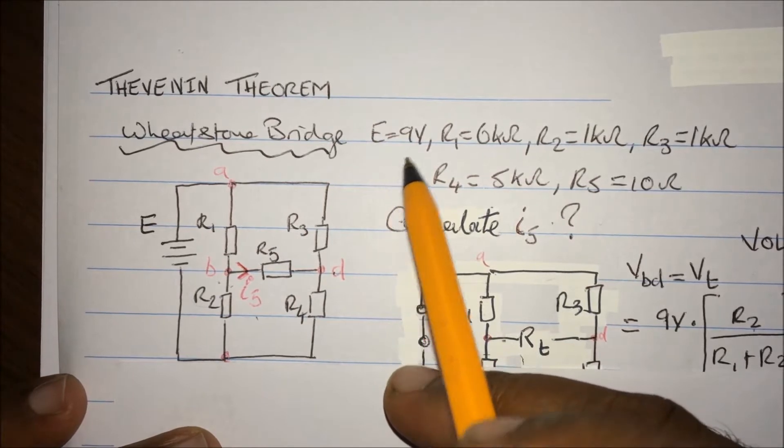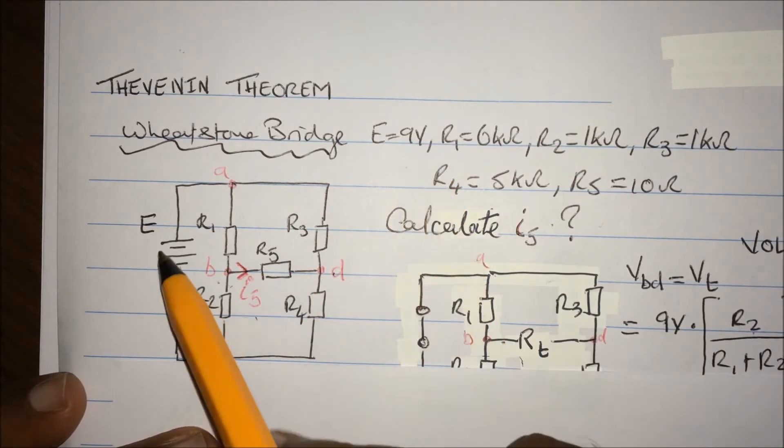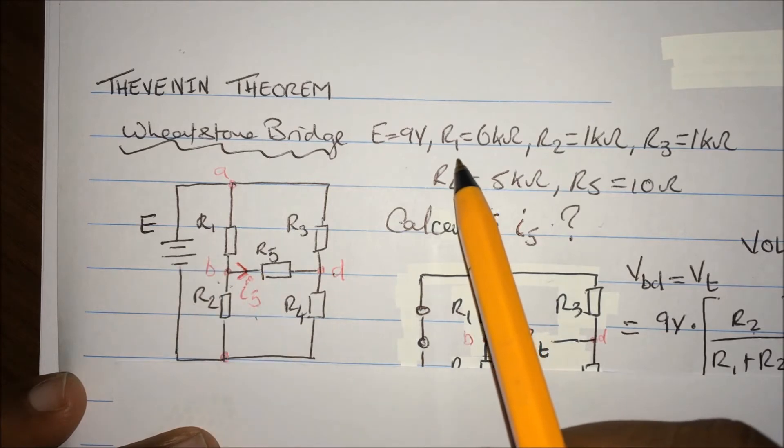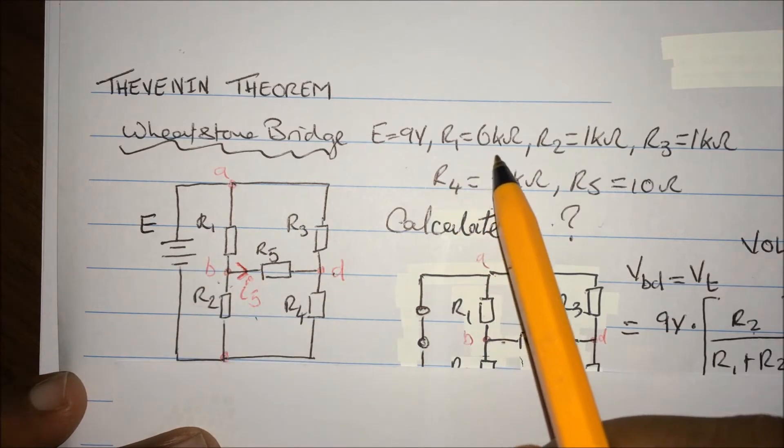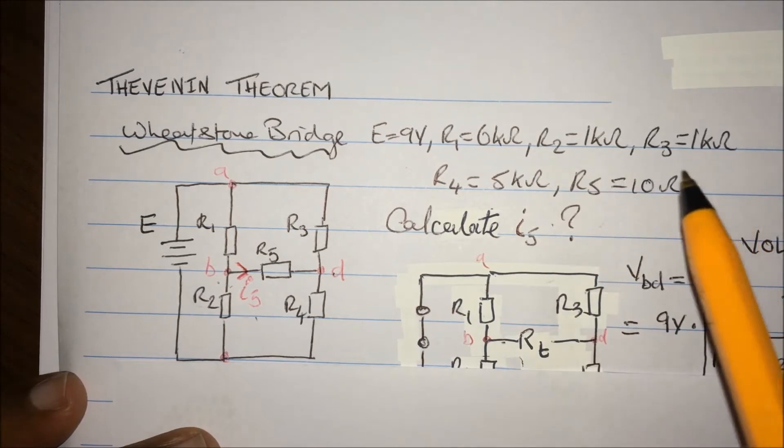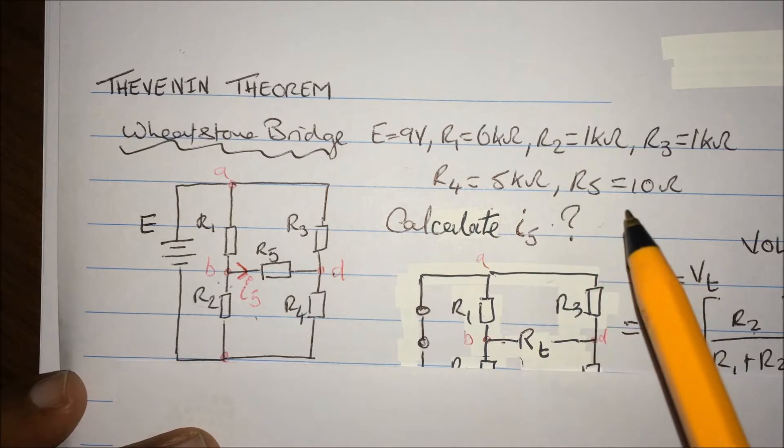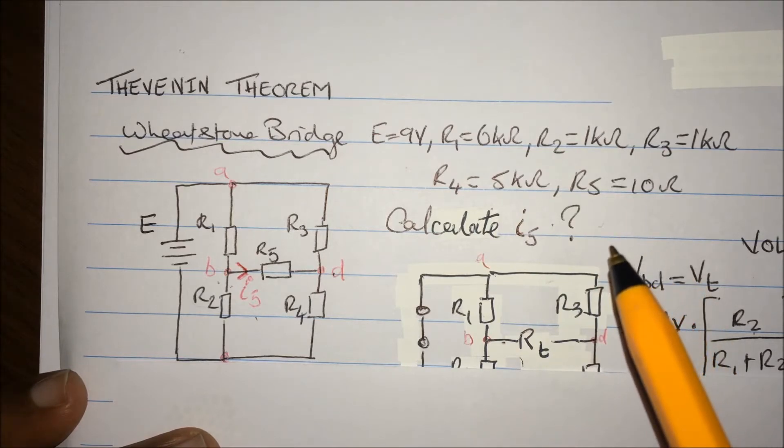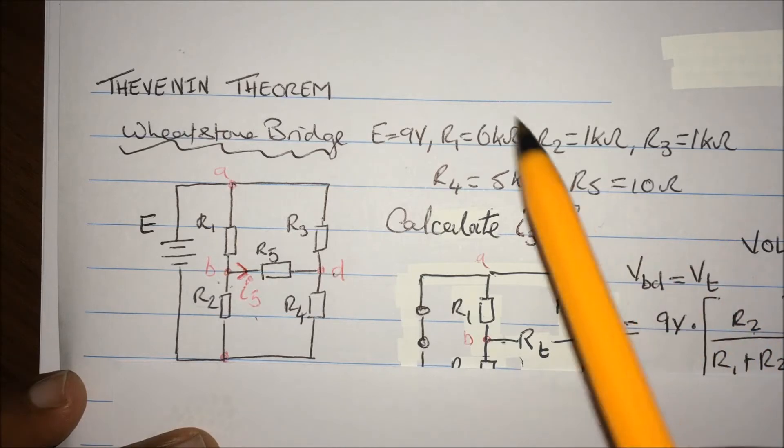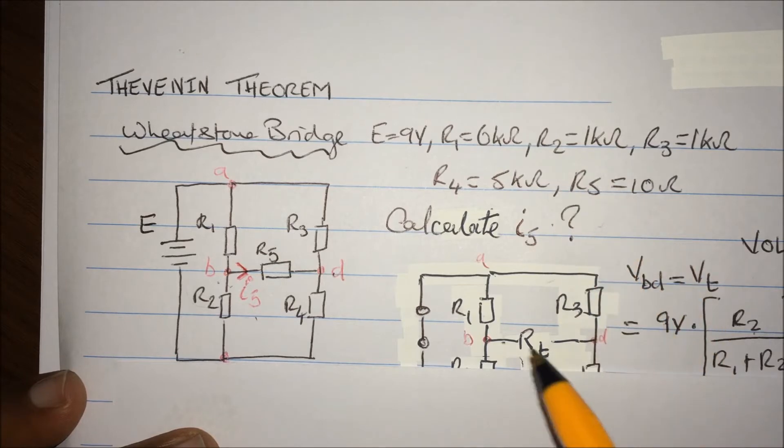Now they were given in the equation, they give us 9V for E, and then say that R1 is equal to 6 kilohms, R2 is equal to 1 kilohm, R3 is equal to 1 kilohm, and R4 is equal to 5 kilohms, but R5 for some reason is only 10 ohms. I think they just tried to trick us, but anyway, just to make sure we work out our kilohms and our ohms together.